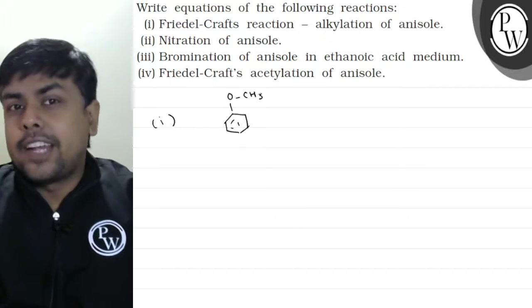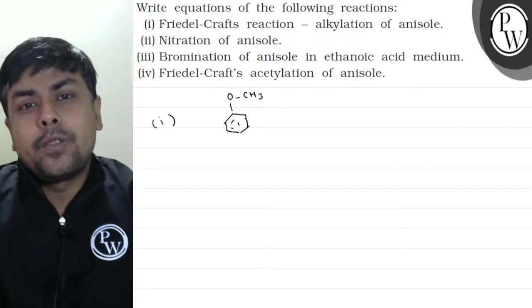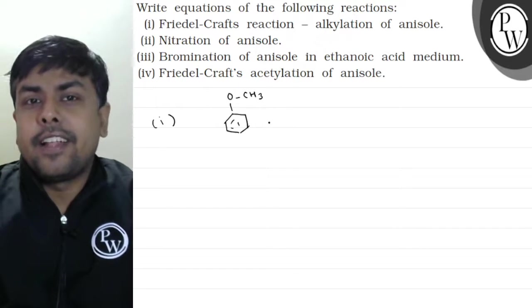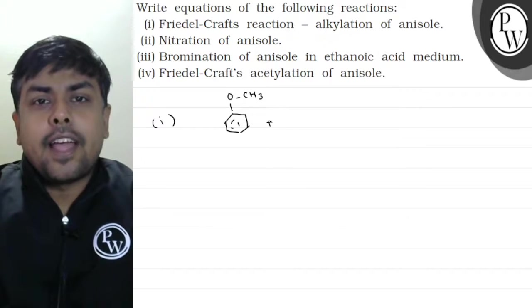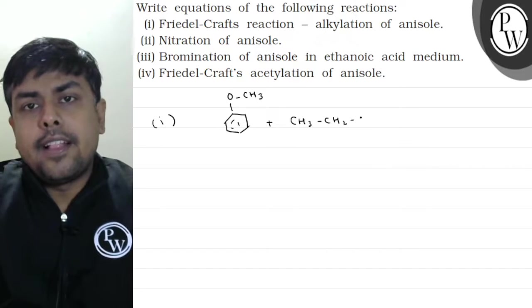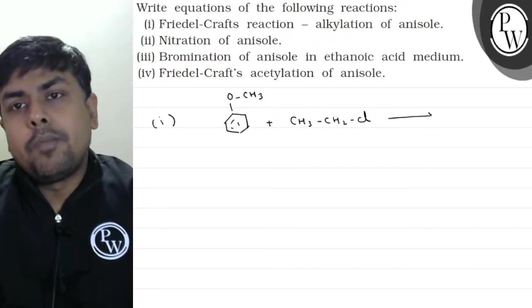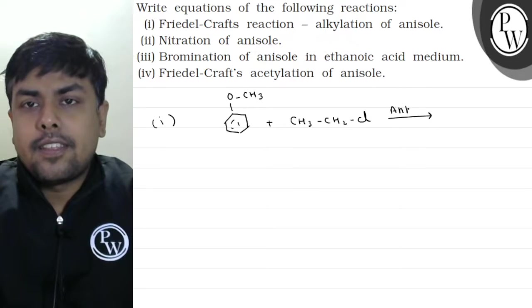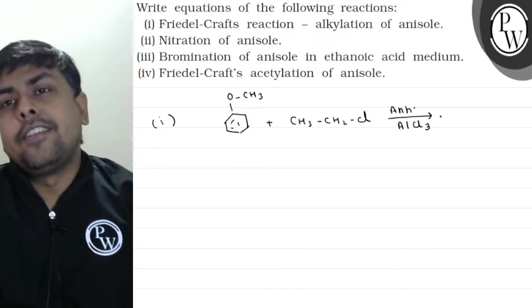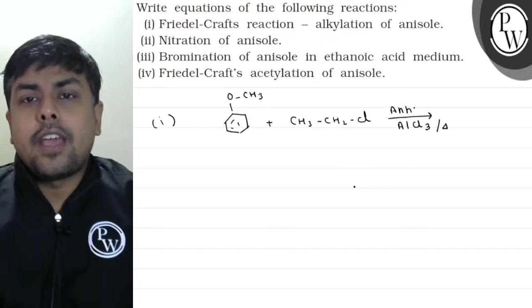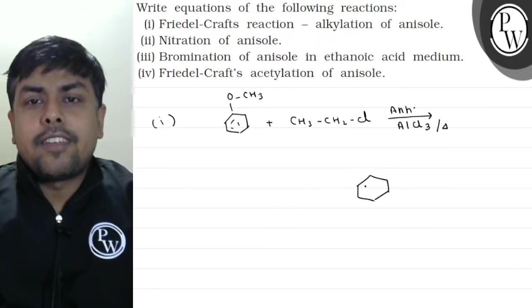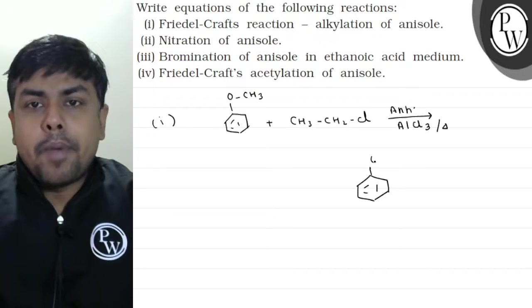Is this ring activator? Absolutely. So any electrophile that comes can attack at ortho or para position. Now I need to do Friedel-Crafts alkylation. I'll take an alkyl halide: C-H-3, C-H-2, C-L. I'll treat this with anhydrous AlCl3. This is a Lewis acid.